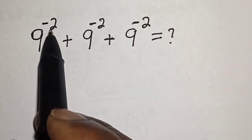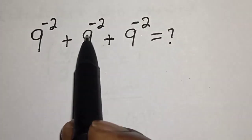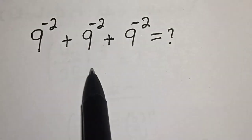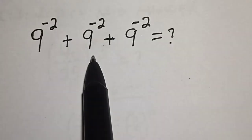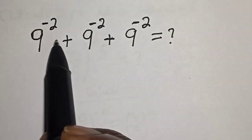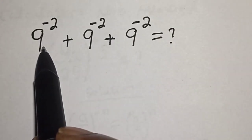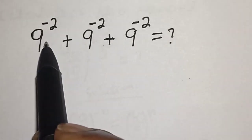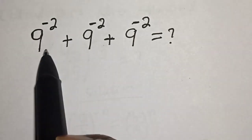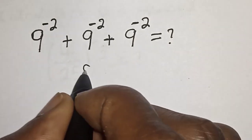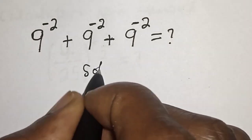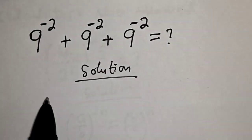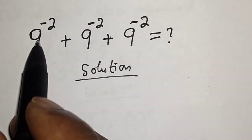9 raised to power minus 2, plus 9 raised to power minus 2, plus 9 raised to power minus 2 is equal to what? Hi everyone, welcome to my class. In this class we quickly want to simplify this question. Please don't forget to like, share, comment and subscribe.